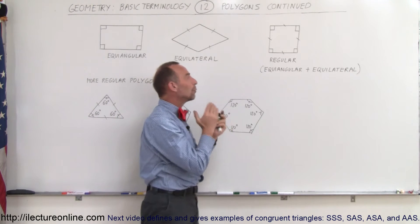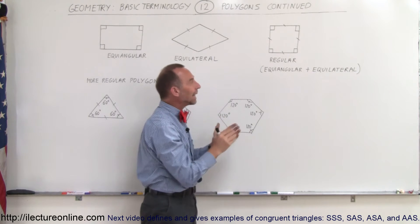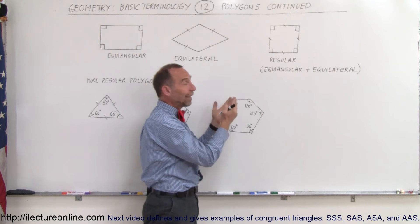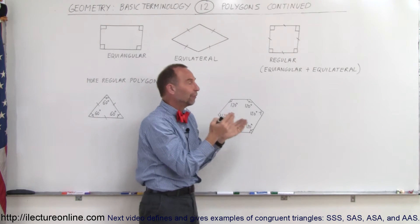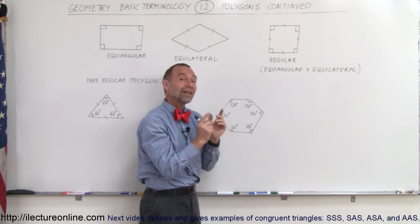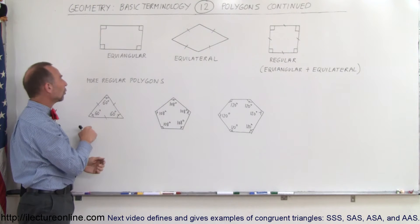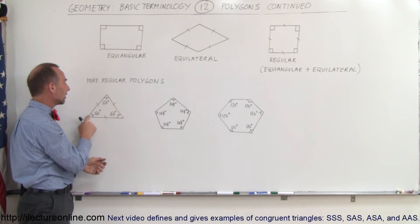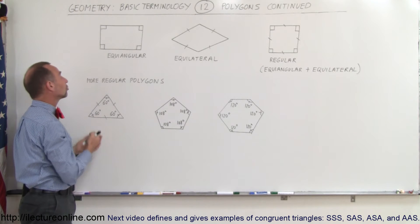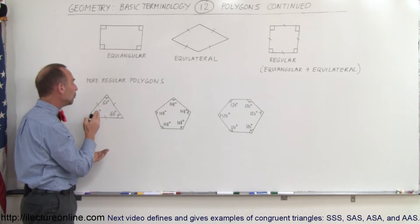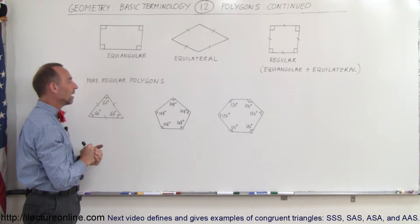Here we have what we call a regular polygon. For a polygon to be called regular it must be both equiangular and equilateral. A square has all four sides the same and all four angles the same, so that's a perfect example of a regular polygon. But it doesn't have to be a square — notice this triangle right here has the same sides and also the same angles, it's equilateral and equiangular, so therefore it is called a regular polygon. All three sides are the same, all three angles are the same.